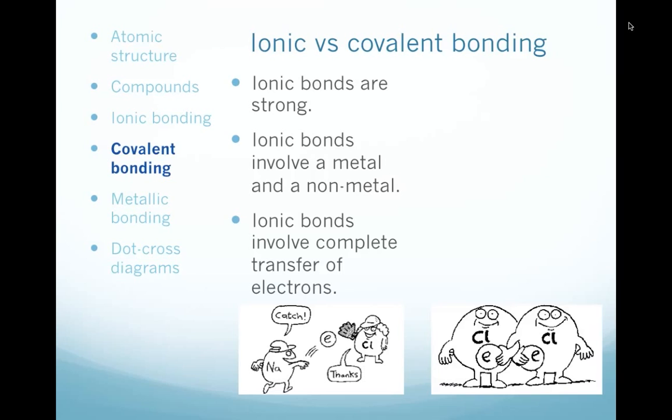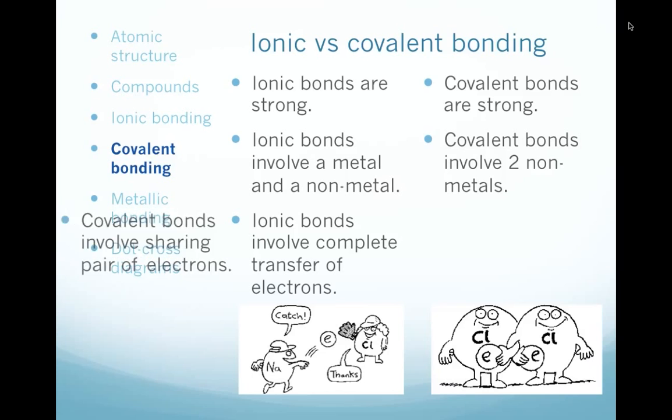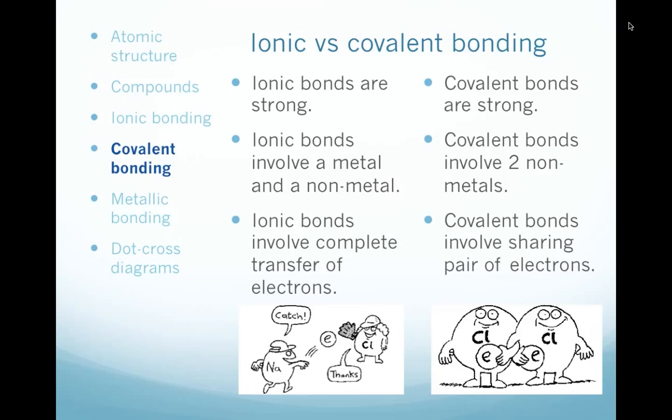Compare that with what happens in covalent bonding. Covalent bonds, well, they're strong too, just like ionic bonds, don't get the impression they're weak. They always involve non-metal, so two non-metal atoms joined together. Could be the same element or different elements. They involve, by comparison, the sharing of electrons rather than the complete transfer of electrons.